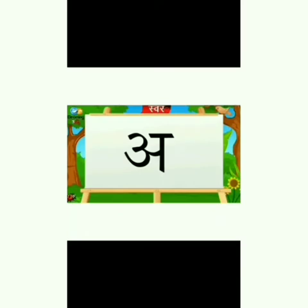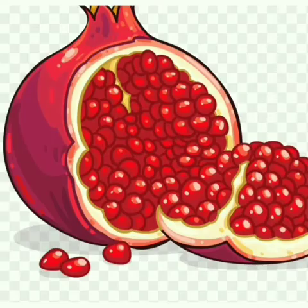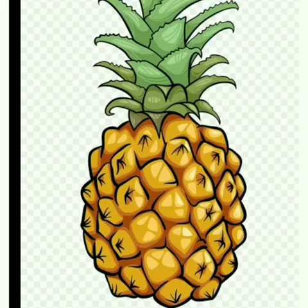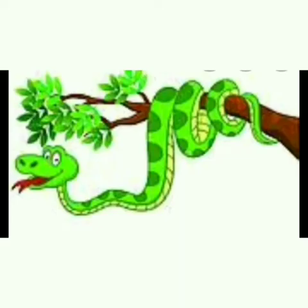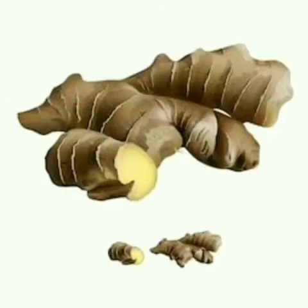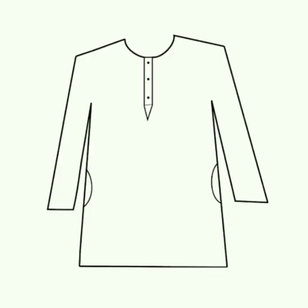First, swar अ. अ से क्या क्या होता है? आओ देखें। अ से अनार, अ से अमरूद, अ से अनानास, अ से अजगर, अ से अखबार, अ से अदरक, और अ से अचकन।